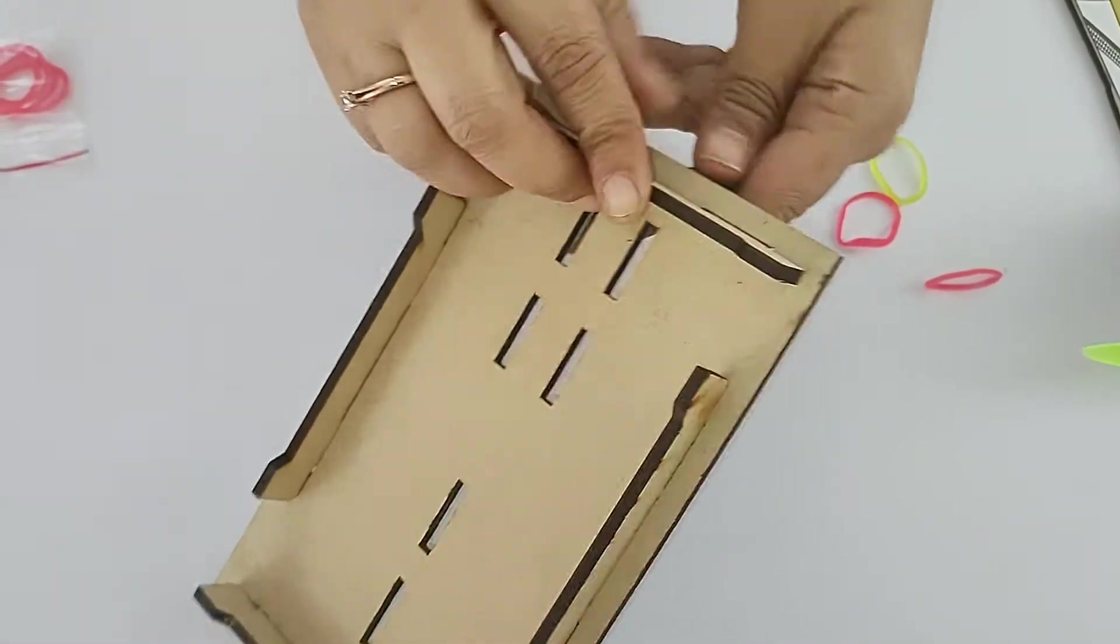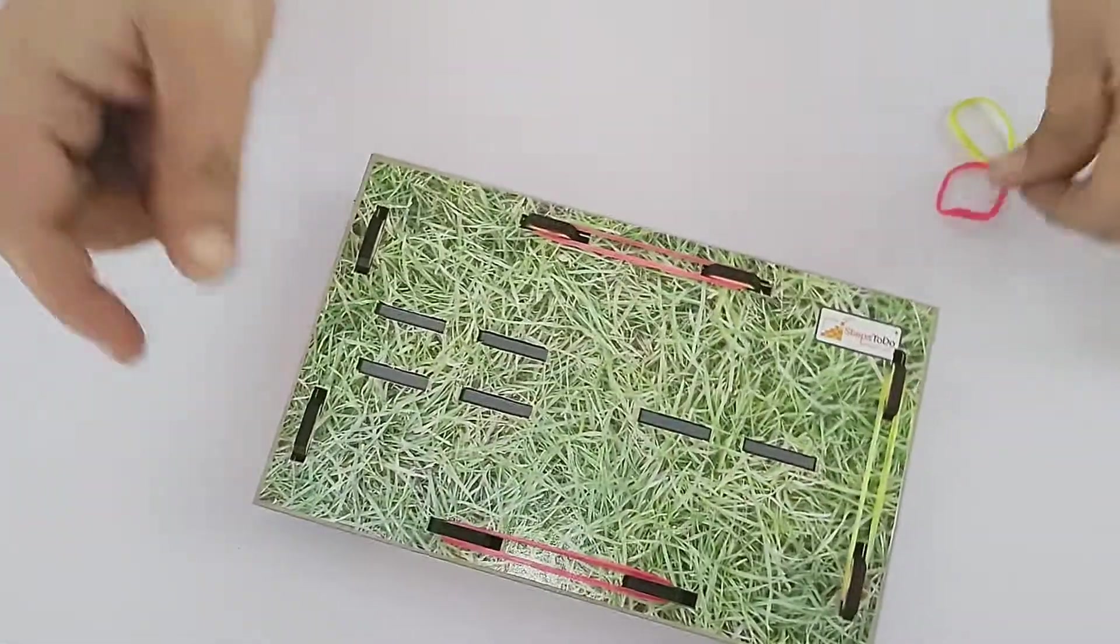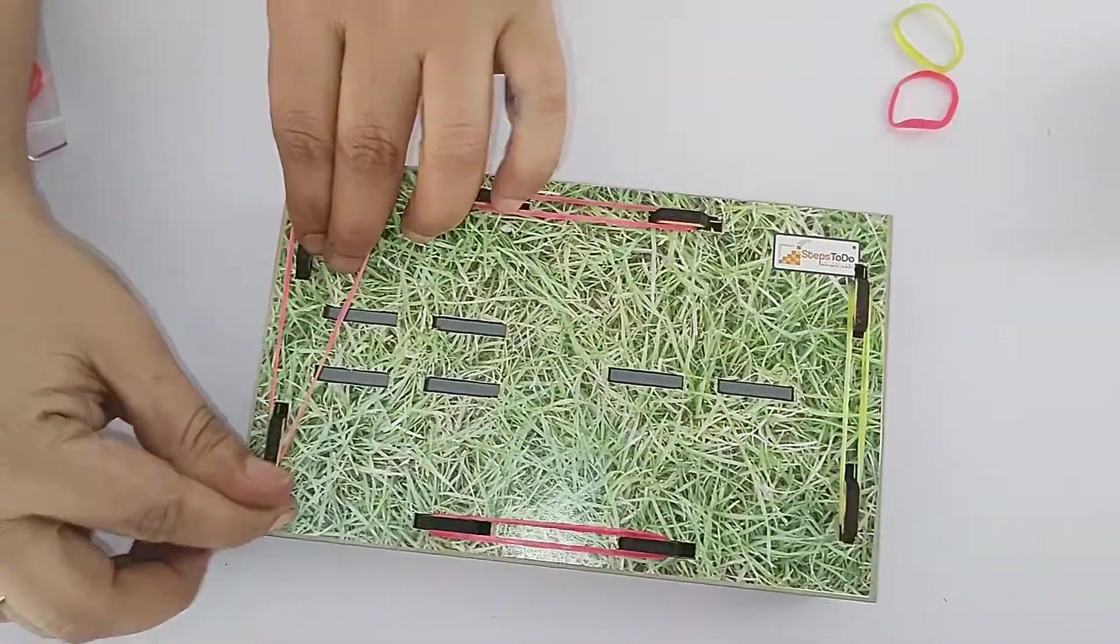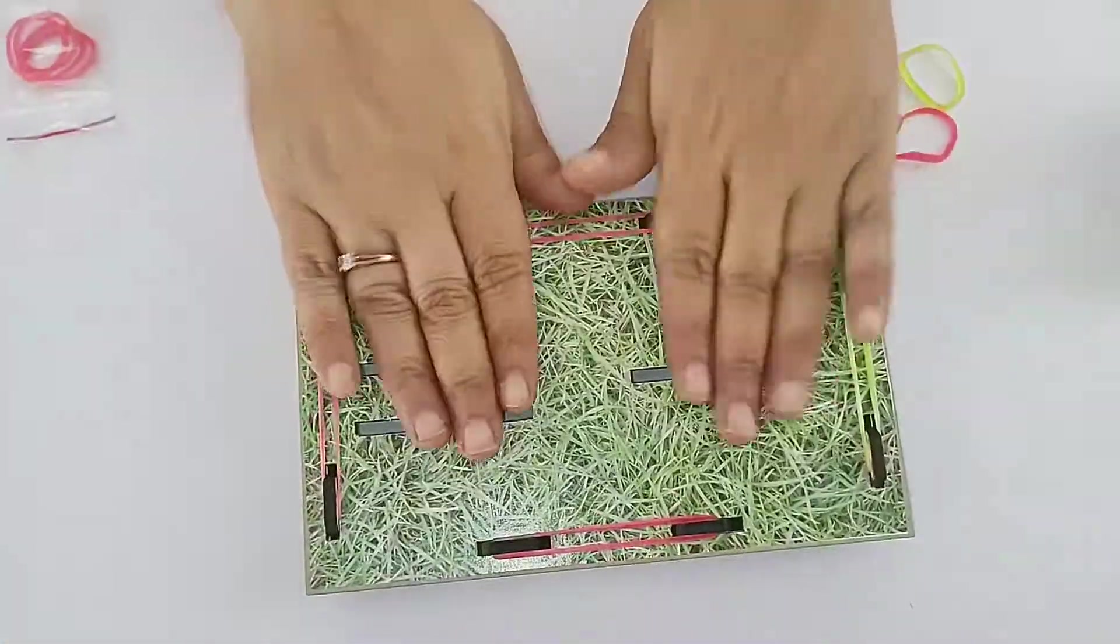And another way is, insert the rubber band, twist it in your hand. So now it is a firm board.